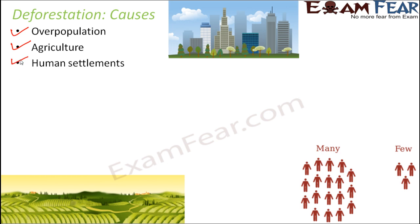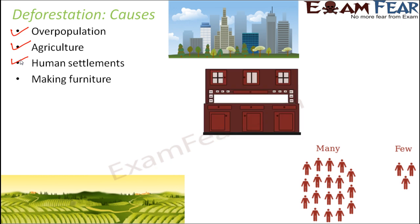Human settlements — these increasing numbers of people, where are they going to stay? They need houses. So to have those residential apartments, from where do we get the space? They cut down trees and develop the residences.